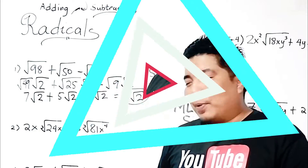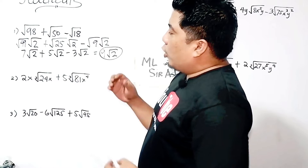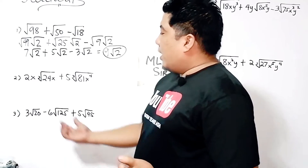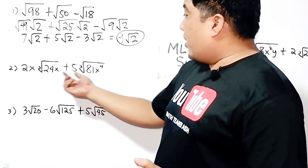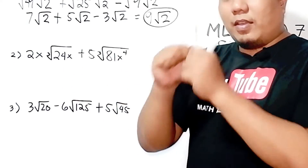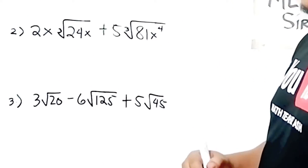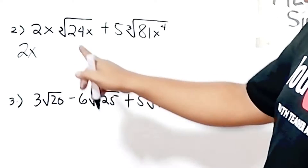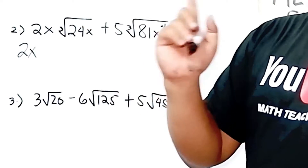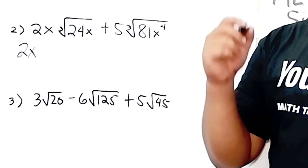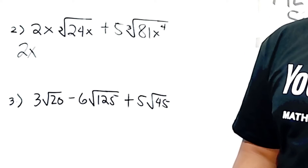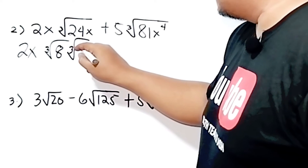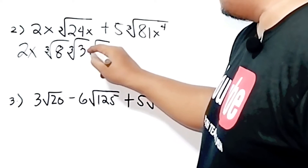Let's go to the second example. In this second example we have variables: 2x times cube root of 24x plus 5 times cube root of 81x to the 4th. Look at the given radicands — they are not the same, but they can be simplified. Let's write 2x first, then break down 24x. Remember, the index is 3, so that is cube root. The factors of 24 where one factor is a perfect cube are: cube root of 8, cube root of 3, and cube root of x, because 8 times 3 is 24 times x.